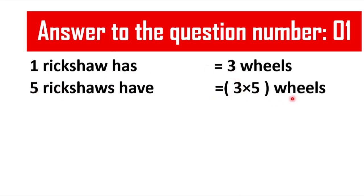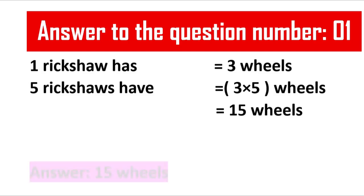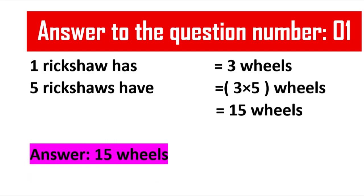Three into five means we multiply three with five, and the answer will be 15. So if we multiply three by five the answer is 15, and that is the answer to question number one. Whenever you solve a question, in the last line you should always write the final answer — so here the answer is: 15 wheels.